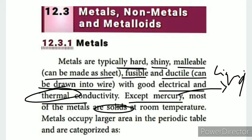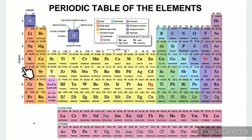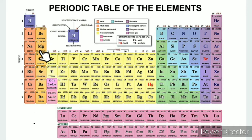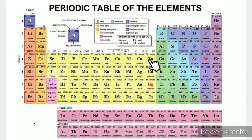Looking at the periodic table, metals are very important. Alkali metals include Lithium and others in that group. The alkaline earth metals group includes elements such as Radium. These are followed by the Transition metals.